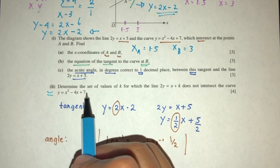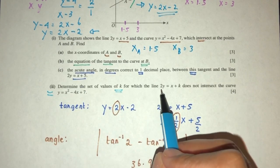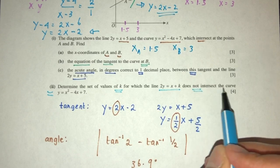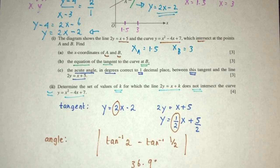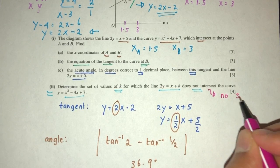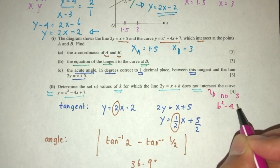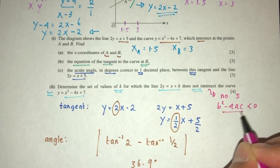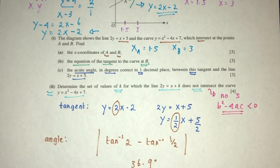Now, part 2, we have to find the set of values of k for which the line, this, does not intersect this. Pretty easy. If it does not intersect, it means it does not have, have no solution. It means b squared minus 4ac has to be less than 0. So, that's the idea behind this question.